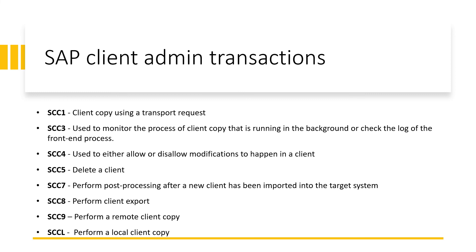SAP transactions used for client administration purposes. SCC1 — this transaction is used to perform a client copy using a transport request. As discussed in the client copy section, the client export-import method uses a transport to copy a client from the source system to the target system, and transaction SCC1 is used to perform that operation. SCC3 — transaction code SCC3 can be used to monitor the process of a client copy running in the background or check the log of the front-end process. Note that a client copy can be executed either in the background or in the foreground; if the source client's size is bigger, it is better to run the copy in the background so that front-end operations are not disturbed.